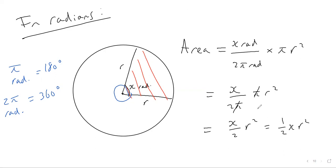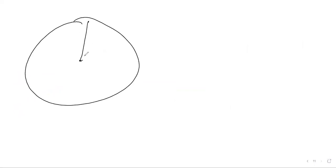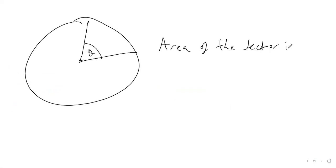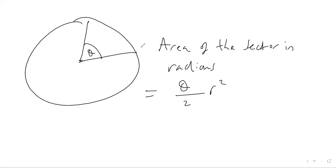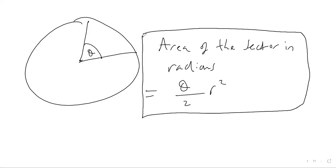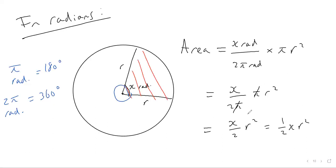So basically the area of a sector in radians is just half times the radius squared. In general, if you've got a circle with an angle of theta, the area of the sector in radians equals theta over 2 times r squared — that's ½θr². That's because the π's cancel out when you deal with radians.